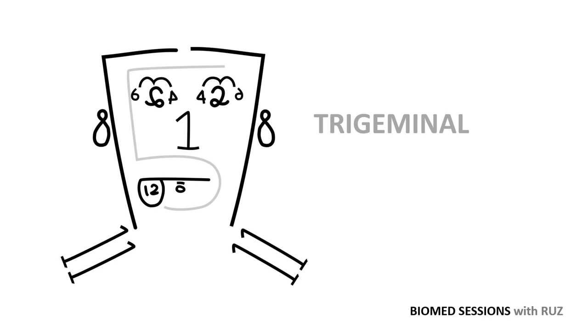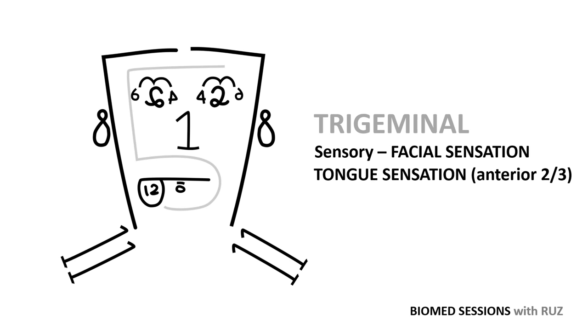Cranial nerve 5, the trigeminal nerve, is mixed, carrying both sensory and motor fibers. Tri means 3, which hints at the fact that this nerve has 3 branches which together aid in facial and teeth sensation, in addition to sensation from the anterior two-thirds of the tongue. Also, it has motor fibers which are involved in mastication, i.e., biting and chewing.